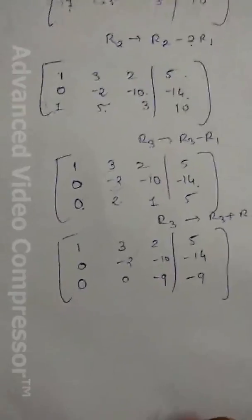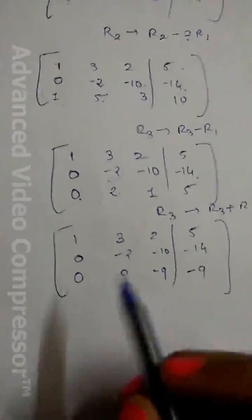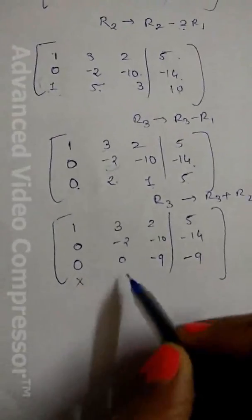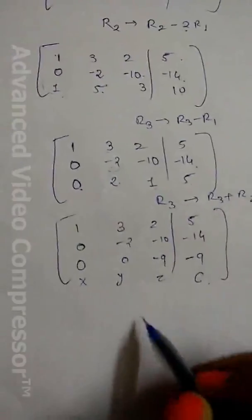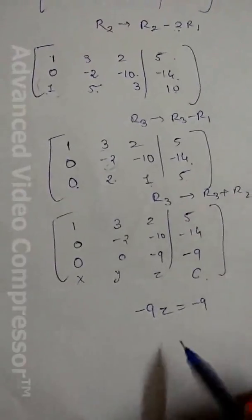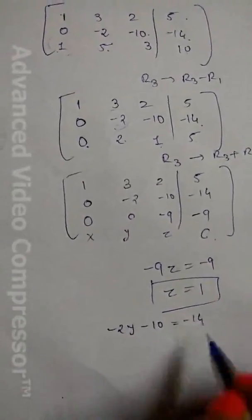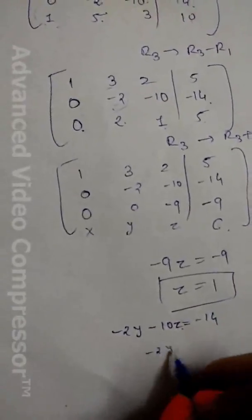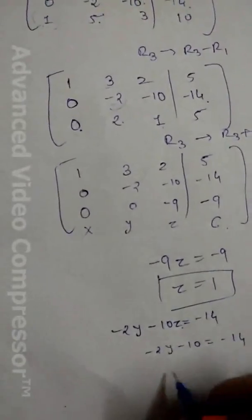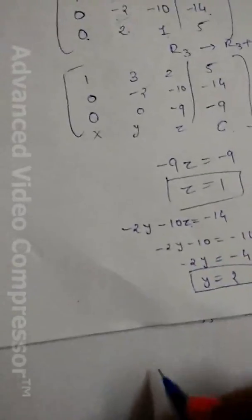Now we find the solution by back substitution. The augmented matrix columns represent x, y, z coefficients and the right-hand side. From the last row: 9z = −9, so z = 1. From the second row: −2y − 10z = −14; substituting z = 1 gives −2y = −4, so y = 2.